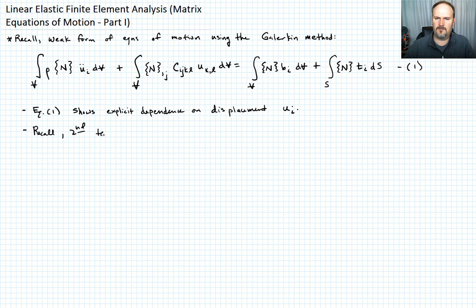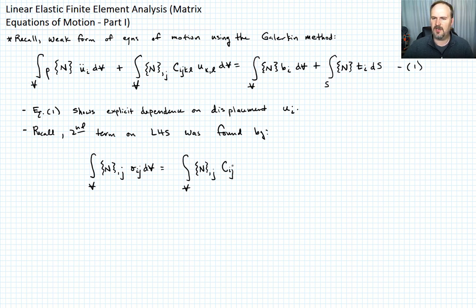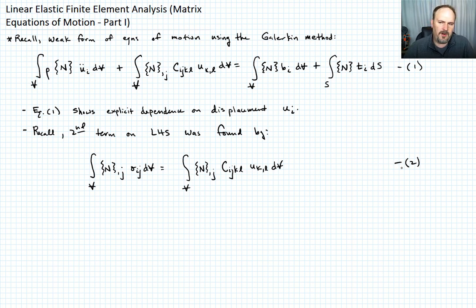The second term on the left-hand side was found from the following: the integral over the volume of N partial with respect to x_j of sigma_ij dV equals the integral over the volume of N partial x_j times c_ijkl u_k comma l dV. Go back to the previous lectures if you forgot how we did that. As we go forward, I'm going to revert back to the sigma formulation because it's more convenient in the development.